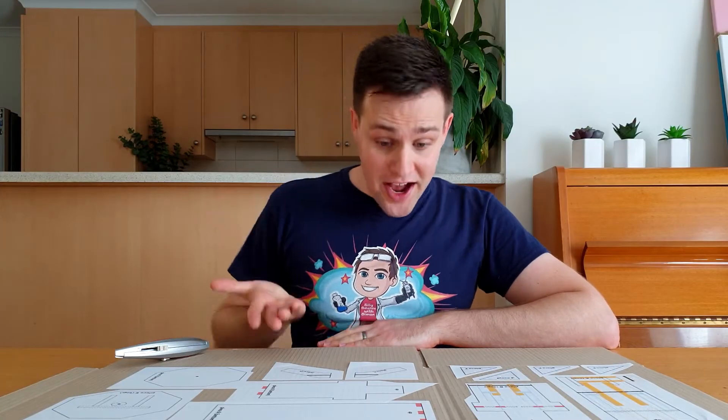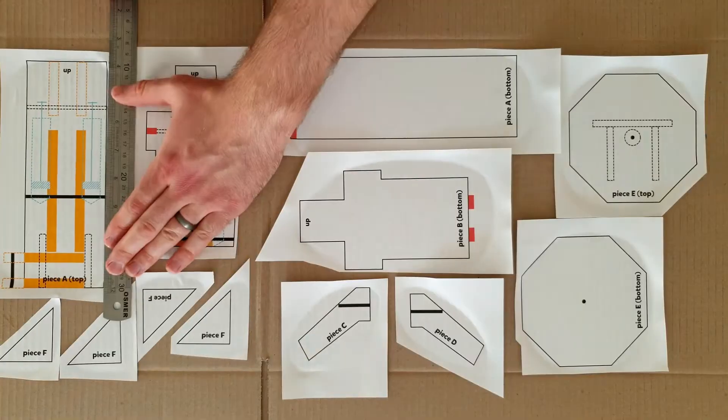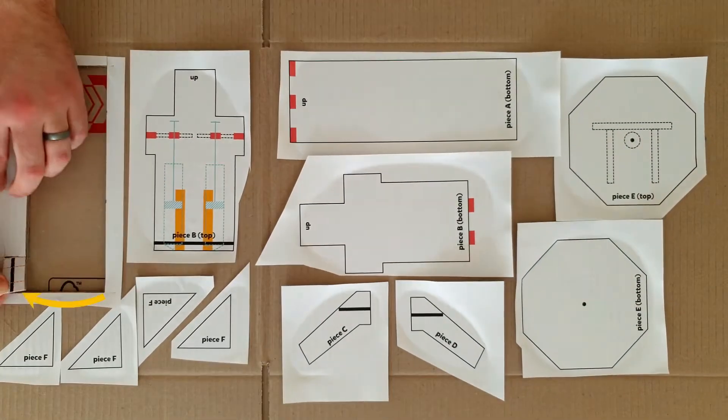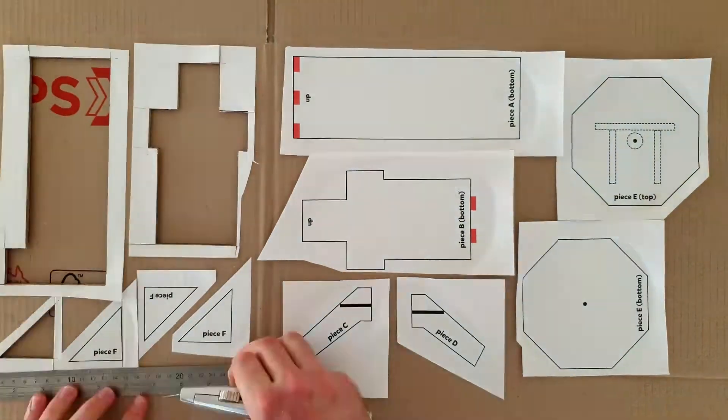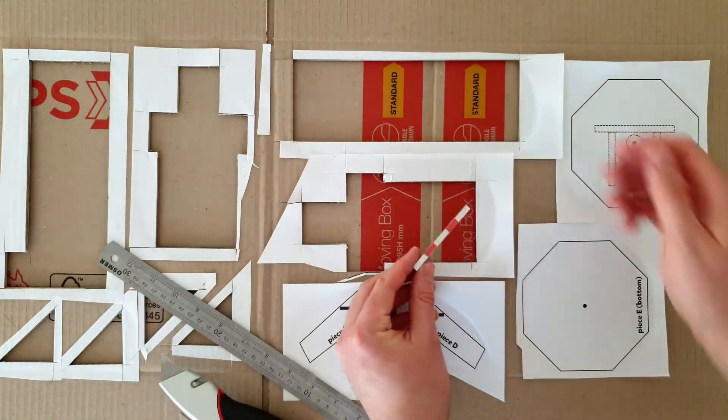Now it's time to cut the pieces out. If you're using a Stanley knife, put something down first to protect your table. Get an adult to help you for this step. When cutting out piece A top, cut off this bit but save it for later. Cut off this bit of piece B bottom and save it for later as well.